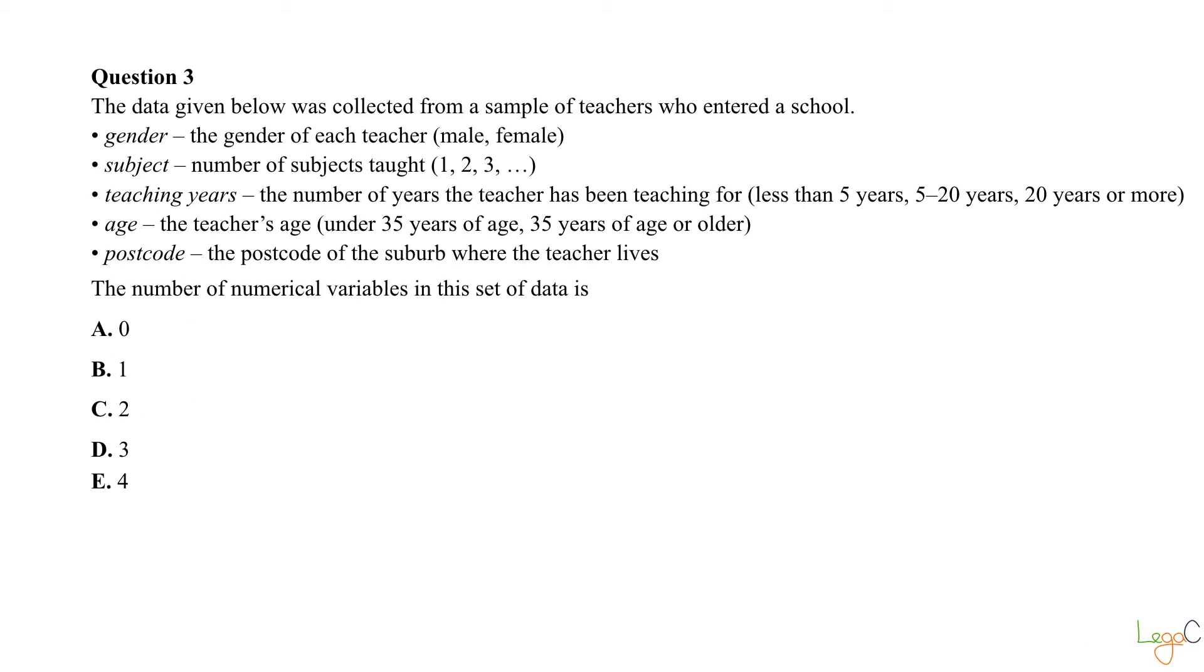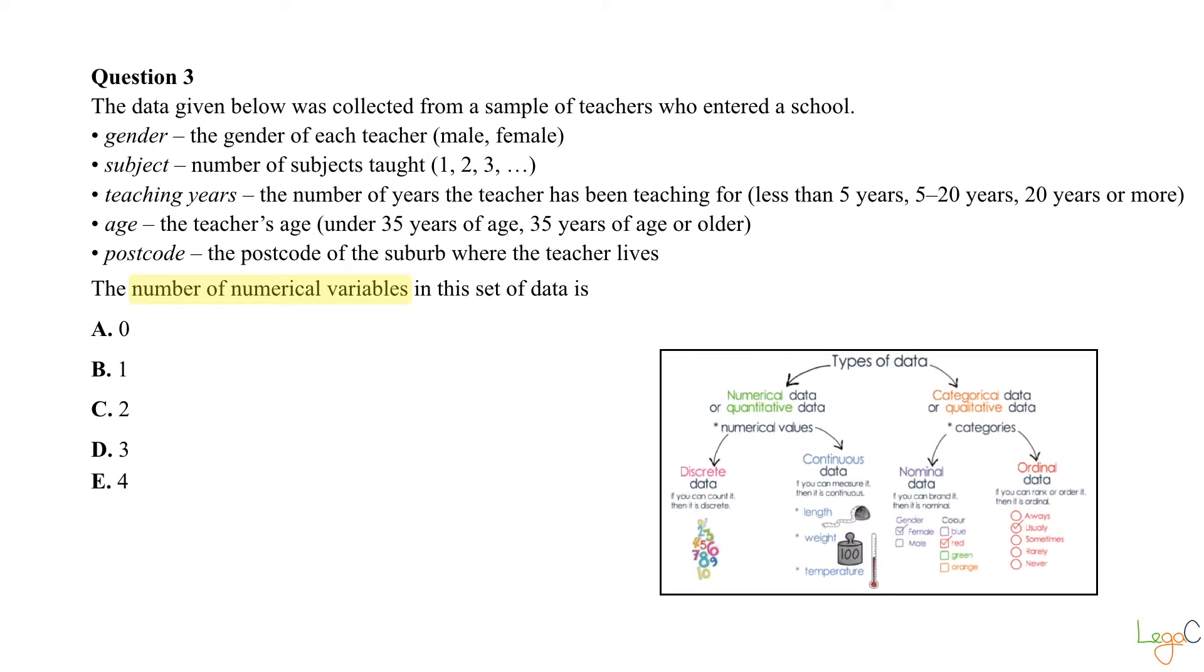In question 3, we have five sets of variables, and the question is asking for the number of numerical variables in this set of data. So let's start with gender. Gender of each teacher, male or female. So this is definitely categorical nominal.